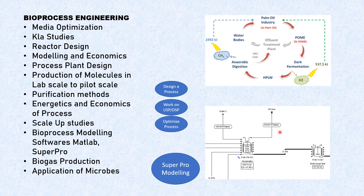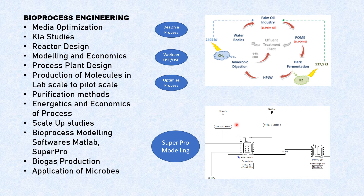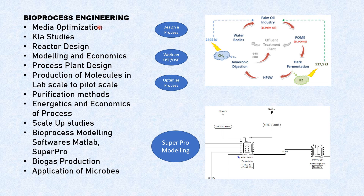Here is a snapshot of SuperPro Designer. If you do process modeling, you can place blocks of vessels and perform mass and energy balance for a particular process. You can also manufacture a product from different raw materials — for example, take wastewater and produce a product from it. There are many concepts; even media optimization alone could fill a separate video, as there are different methodologies and techniques such as response surface methodology.